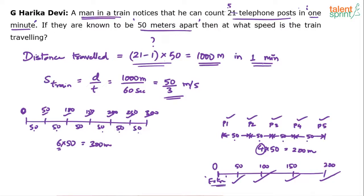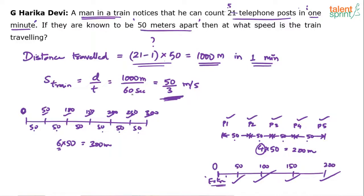Multiply by 50 to get the total distance, then simplify. The speed is 50 by 3 meters per second — 1000 meters in 60 seconds. If required, we can convert this to kilometers per hour. You know how to convert meters per second to kilometers per hour, so do that depending on the options. The speed is 50 by 3 meters per second.